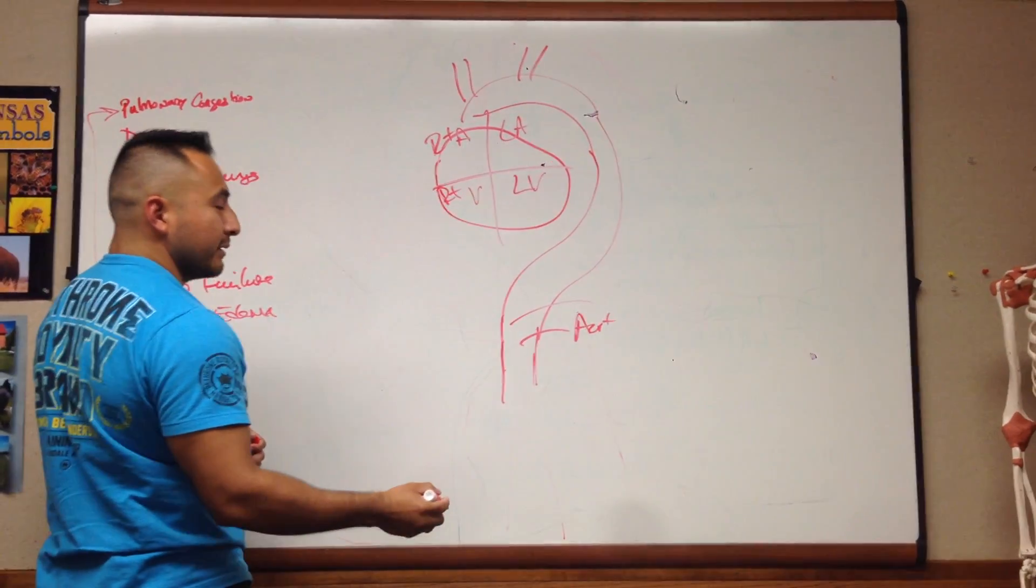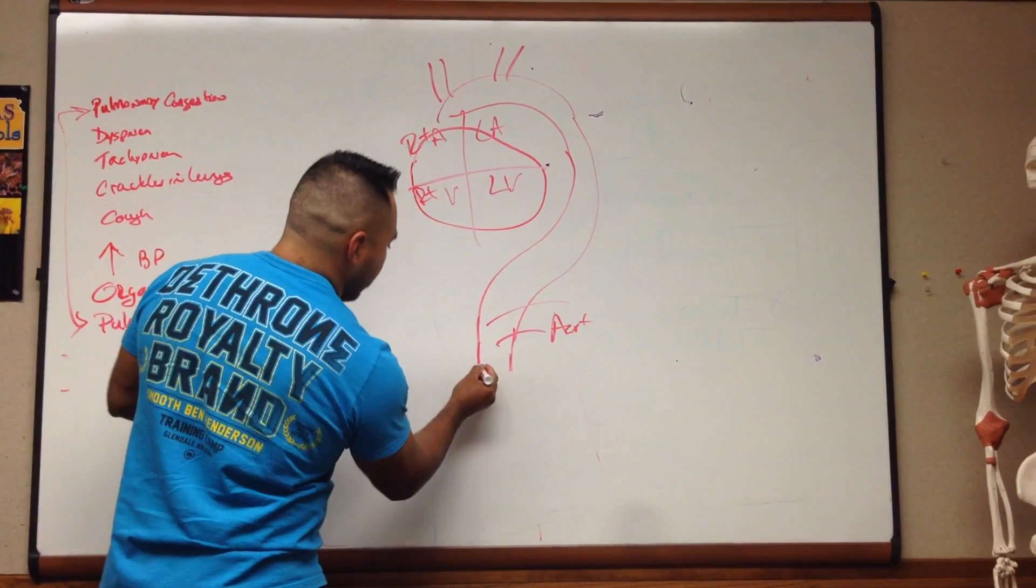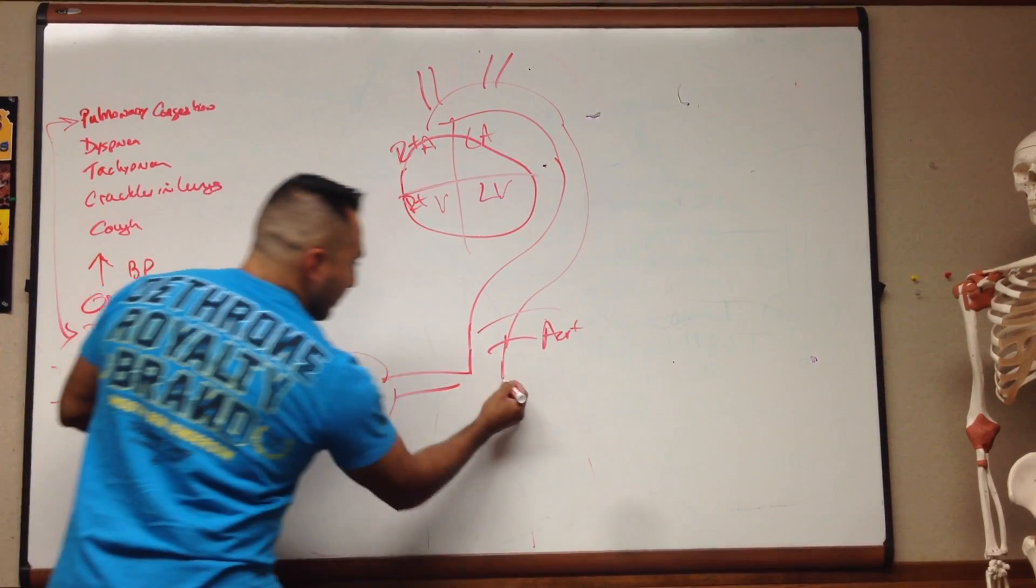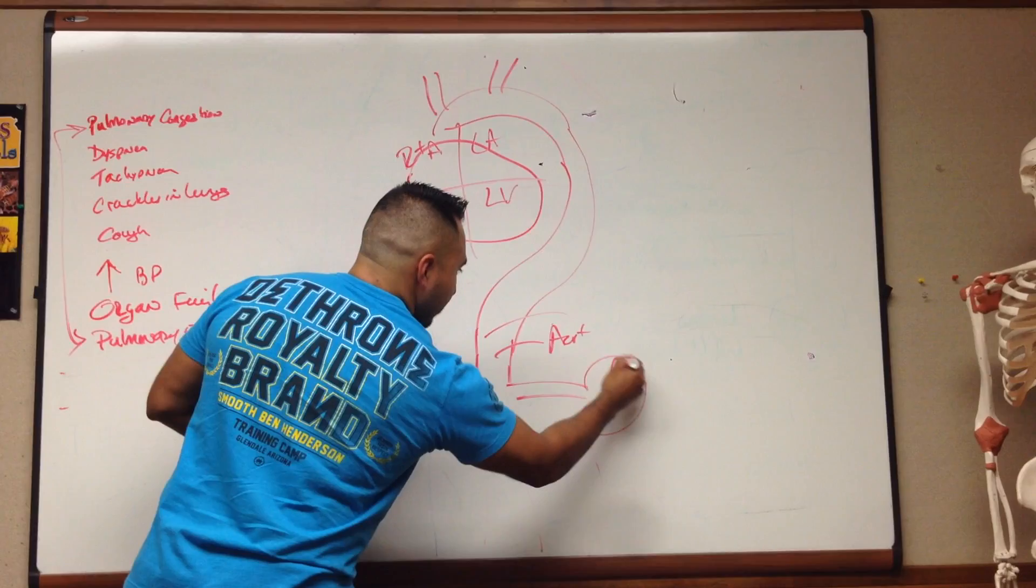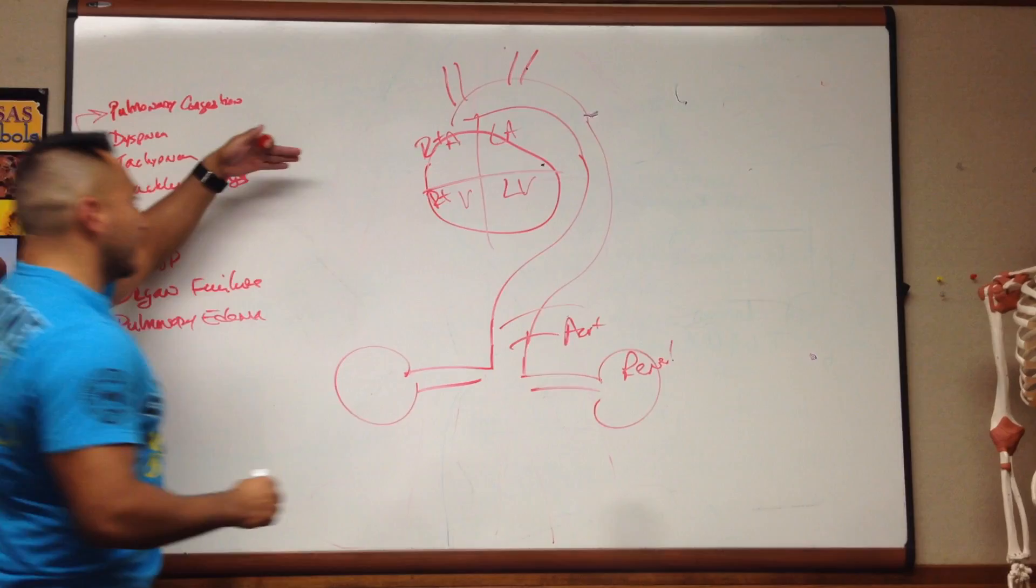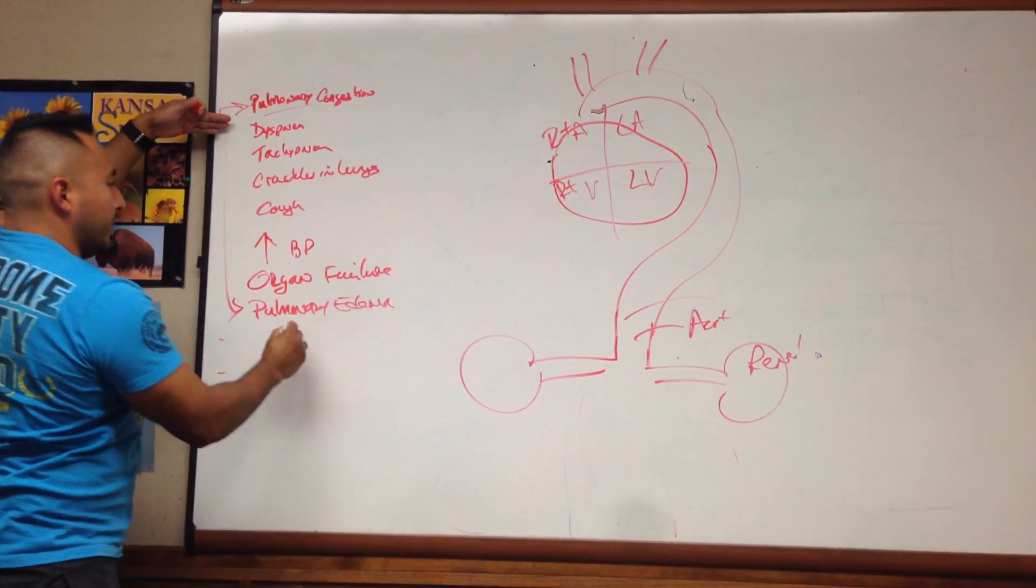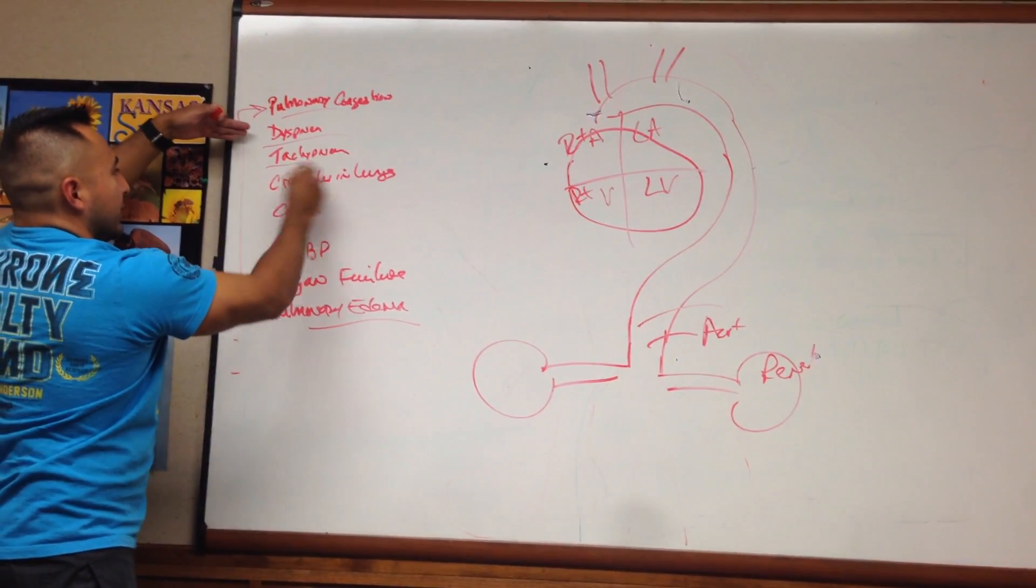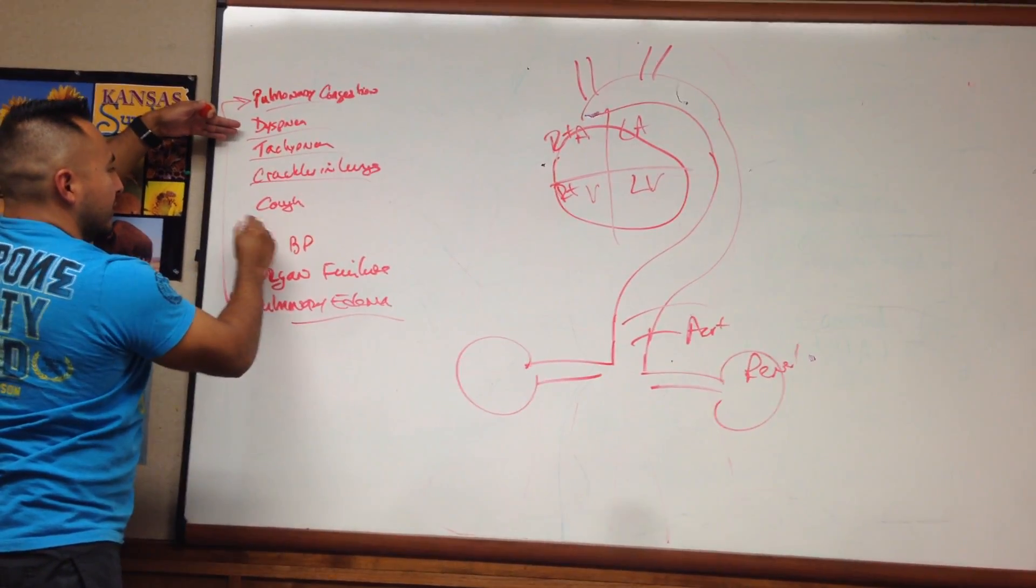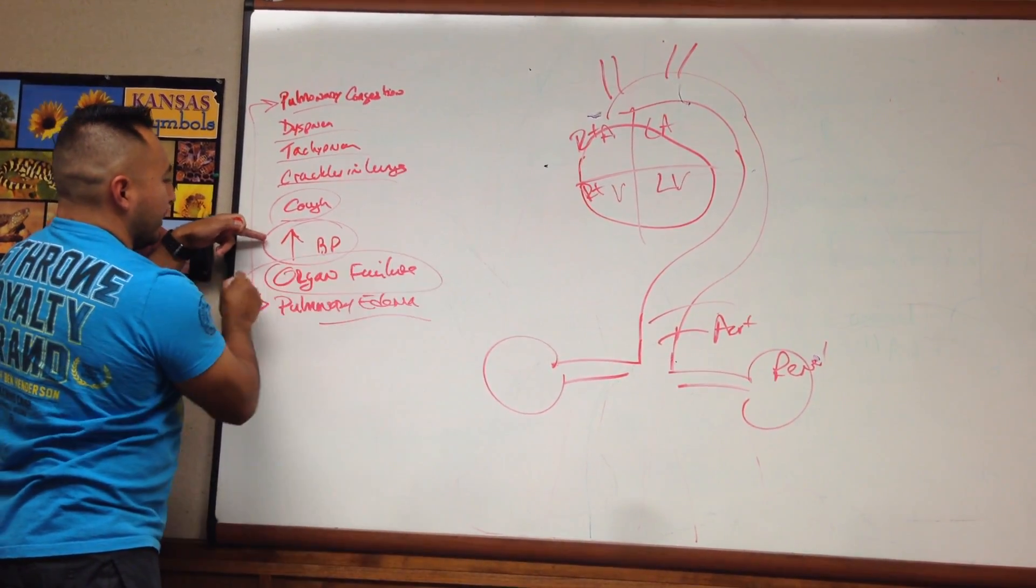So here's the aorta. And we just talked about this not too long ago. Part of the things that they will feed off into would be the renal arteries. So again, the difference between right and left. Left we're going to focus on pulmonary congestion or pulmonary edema, dyspnea, tachypnea, crackles in lungs, cough, and increasing blood pressure. And the biggie here is organ failure.